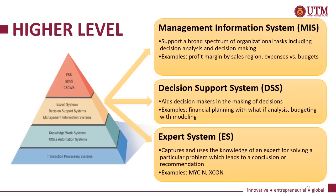At the higher level, we have three main systems. The first is the management information system, which supports a broad spectrum of organisational tasks including decision analysis and decision making — for example, profit margin by region and expenses versus budget. The second is the decision support system, which aids decision makers — for example, financial planning with what-if analysis and budgeting with modelling. The third is the expert system, which captures and uses the knowledge of an expert for solving a particular problem, leading to a conclusion or recommendations.